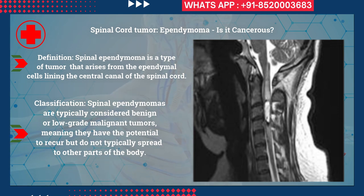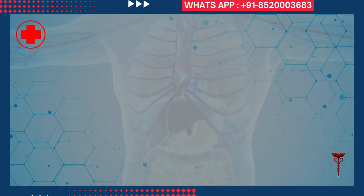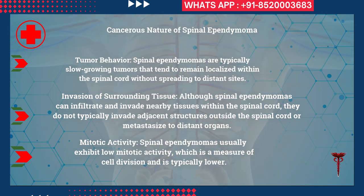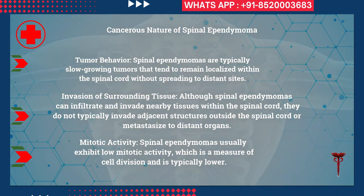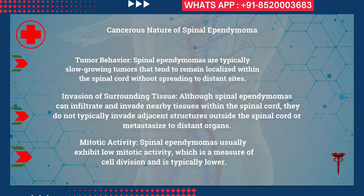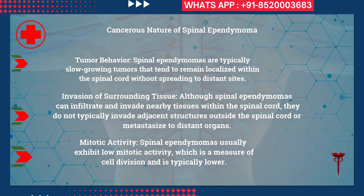Spinal ependymomas do not typically spread to other parts of the body. They are typically slow-growing tumors that tend to remain localized within the spinal cord without spreading to distant sites. Although they can infiltrate and invade nearby tissues within the spinal cord, they do not typically invade adjacent structures outside the spinal cord or metastasize to distant organs.